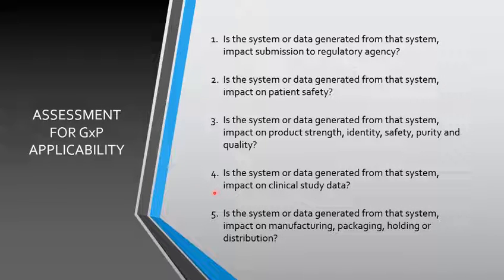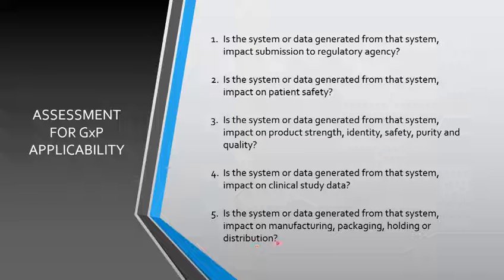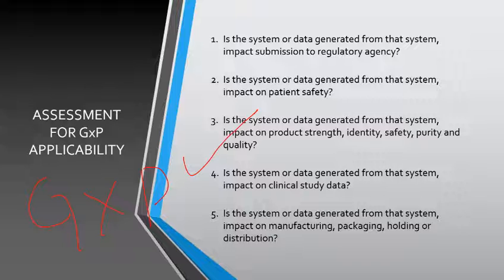Fourth question: does the system or data generated from that system impact clinical study data? If the system data is used for studies in human trials, the answer will be yes, but in product manufacturing the answer will be no. Fifth question: does the system or data generated from that system impact manufacturing, packaging, holding, or distribution? If the system is from the manufacturing or packaging department, the answer will be yes. If any answer to the above five questions is yes, then the system shall be considered as GXP applicable. If all five answers are no, then the system will not be considered a GXP applicable system.